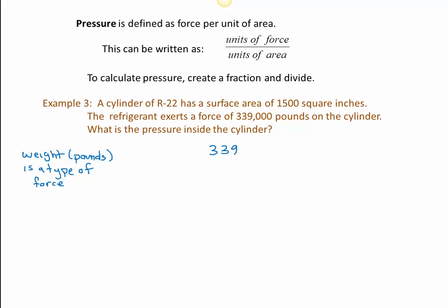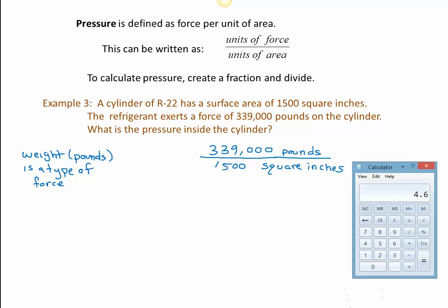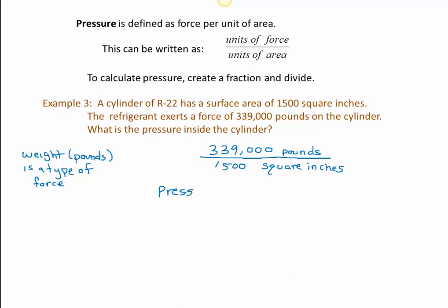Alright, so let's see what we have here. We need units of force divided by units of area. And weight, pounds, is a type of force. We don't actually have any weight in here. This is a force, but I wanted to point out that it's exactly the same thing when we talk about pressure from something laying on top of something else, that pounds is still a type of force. So we have 339,000 pounds of force divided by the 1,500 square inches of surface area. So we have pounds divided by square inches of surface area, PSI. You've probably heard that before. Alright, so let's grab our calculator and see what it gives us. So we have 339,000 divided by 1,500. And that comes out to be 226.